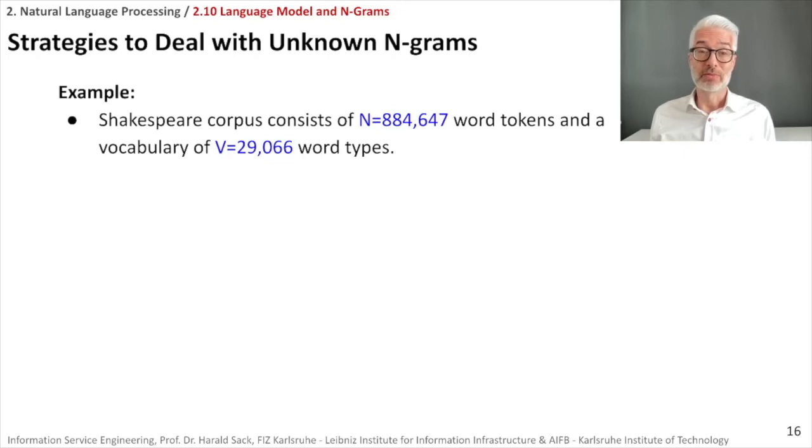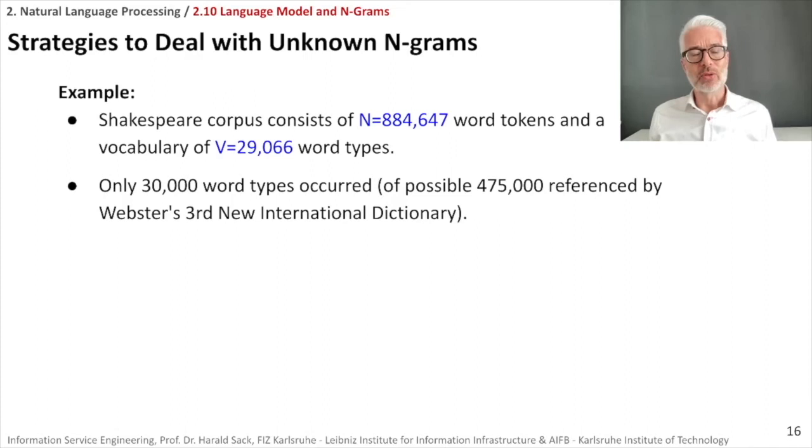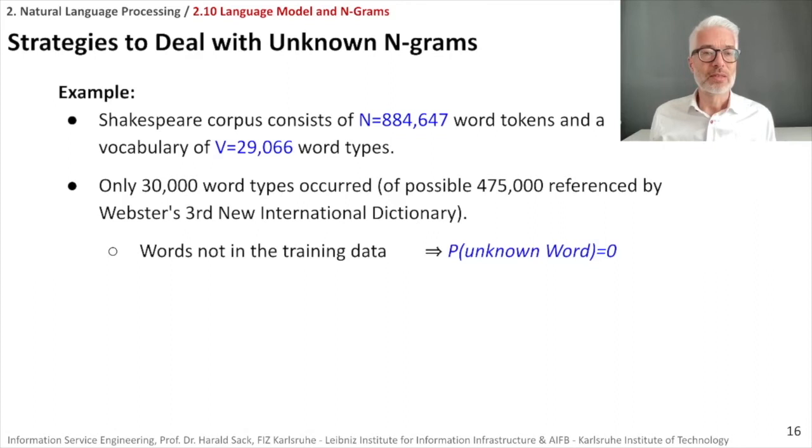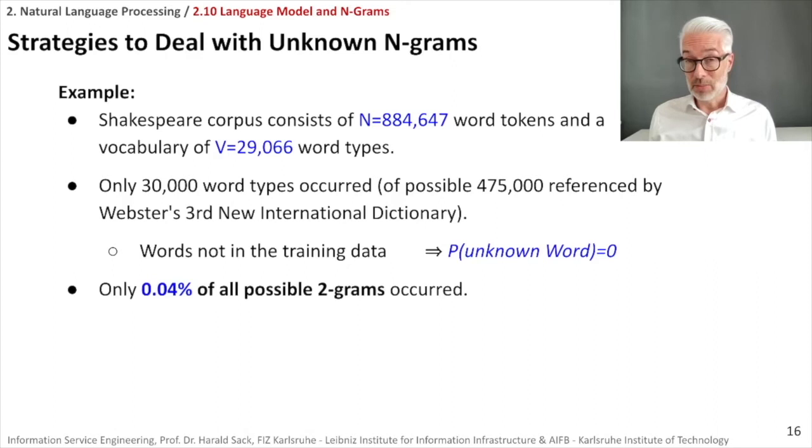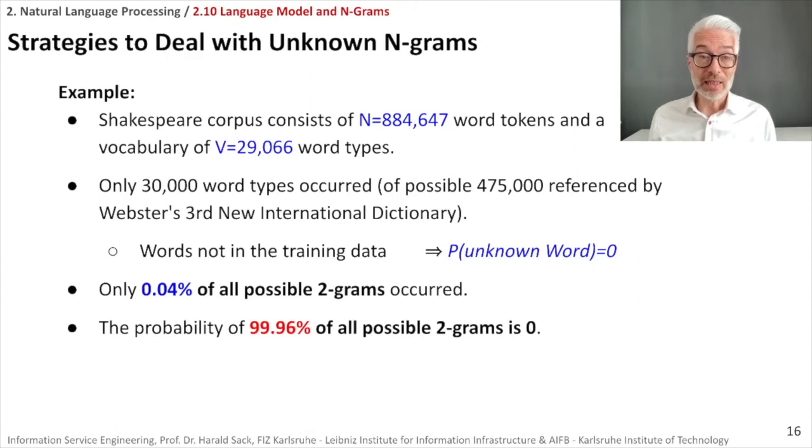Look at the Shakespeare corpus. We already know that the Shakespeare corpus contains more than 800,000 different word tokens and has a vocabulary of roughly 30,000 word types. Only 30,000 word types occur of a possible set of 475,000 words that are referenced in the Webster's International Dictionary. And, of course, there are words then not in the training data if I consider the Shakespeare corpus. The probability of every unknown word now is zero. Another thing is that even then, if I look at the bigrams, only 300,000 bigrams are really used by Shakespeare in the Shakespeare corpus.